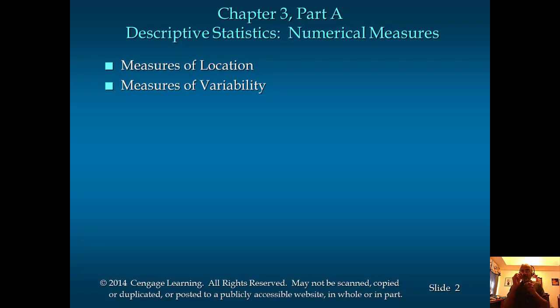Measures of location is about where a particular data point is located within the entire data set, from smallest to the largest value. And measures of variability is about how much the values in the data set are spread out, or how narrowly they are packed. How big is the variability?